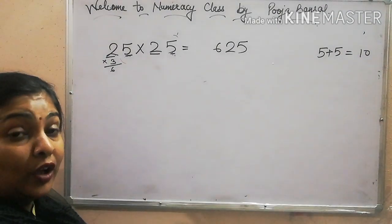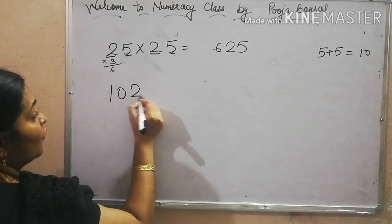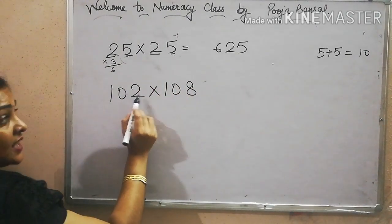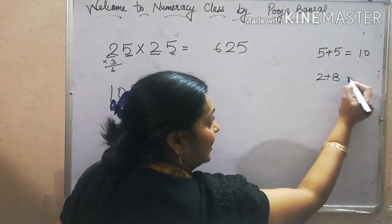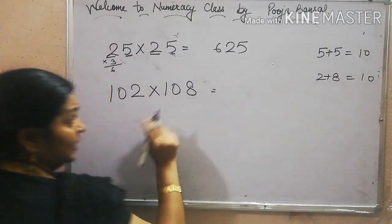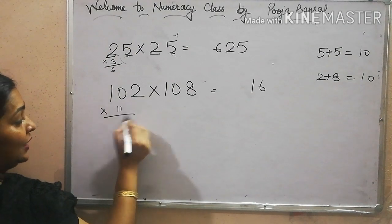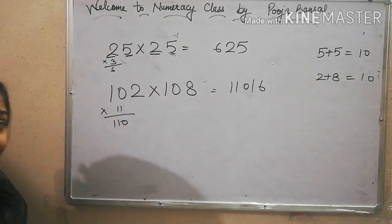Let's work this trick on other numbers. Suppose I am taking 102 into 108. Sum of the ones digit, 2 plus 8 is equal to 10. So we get here 8 twos are 16, and 10 into 11, 110. So easy it is.